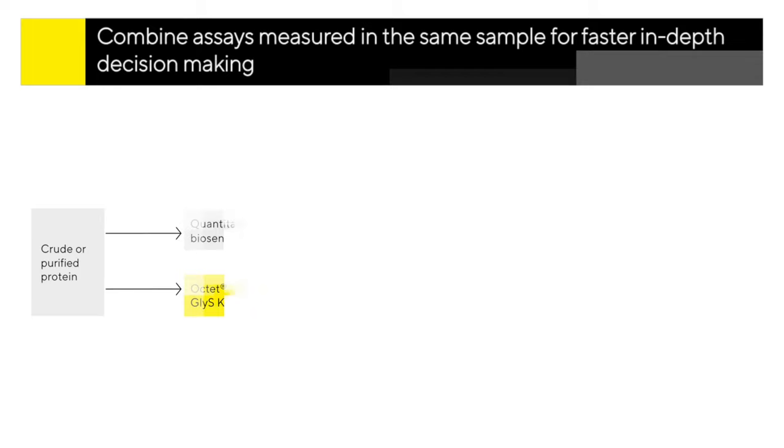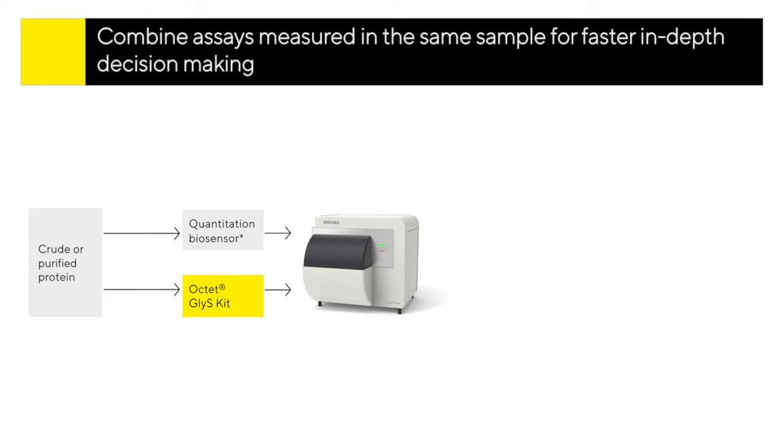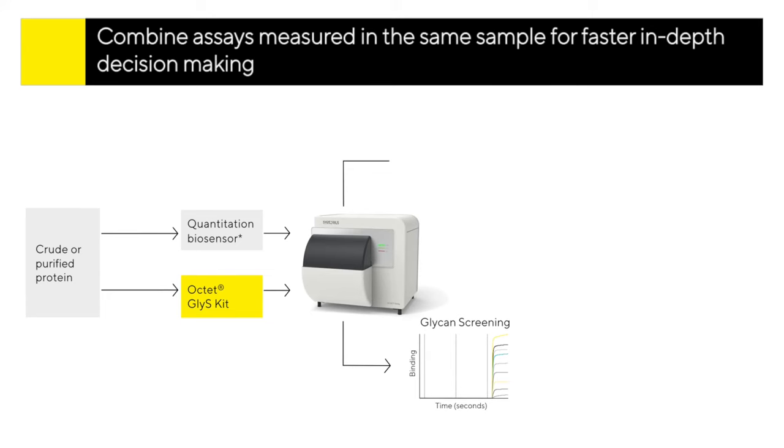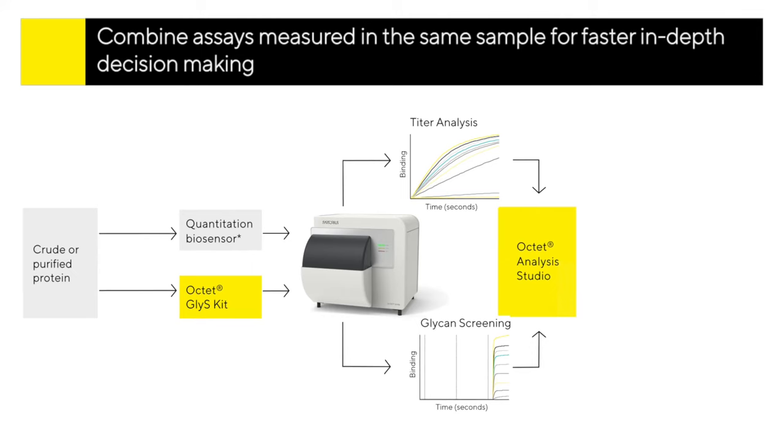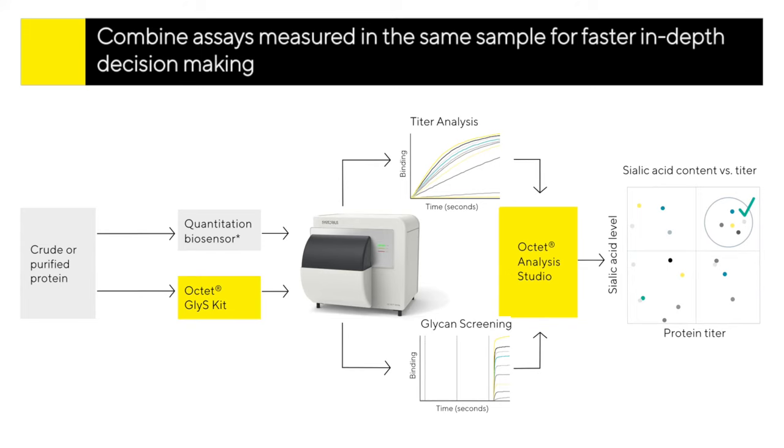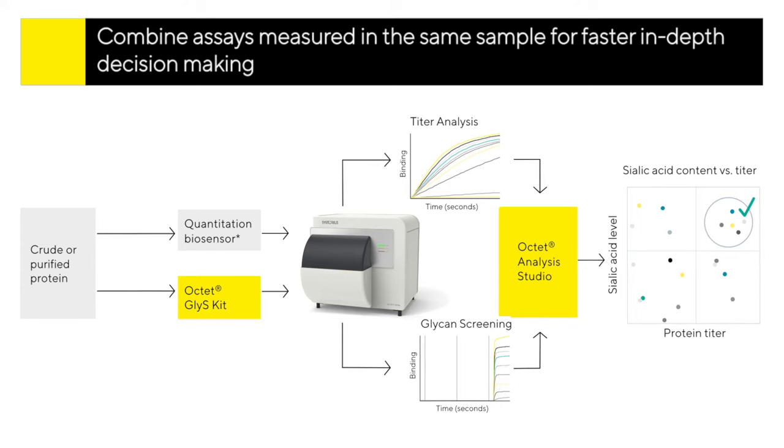You can further increase productivity by using the system's high-throughput capabilities to perform multiple assays in the same sample. For example, you can perform glycan screening and analyte titer determinations as early as the subcloning stage, helping to ensure only high-quality candidates continue downstream and preventing late failures.